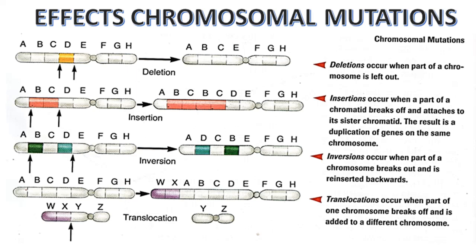This is called genetic material added from another chromosome. How about inversions? Inversions occur when part of a chromosome breaks off and is reinserted backwards, meaning the direction of that part of the chromosome is reversed. Translocations occur when part of a chromosome breaks off and is added to a different chromosome — that is, part of a chromosome breaks off and is combined with another chromosome.